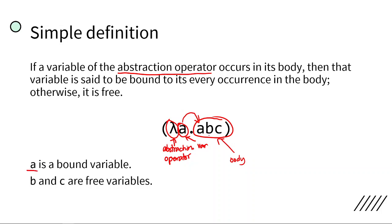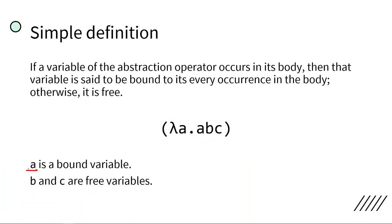However, B and C — they are not listed as variables in the abstraction operator. Therefore, they are free variables. Again, A is a bound variable because A appears in the abstraction operator and can be seen in the body. Meanwhile, B and C are free variables because they were not found as variables in the abstraction operator. That's the simple definition of bound and free variables.